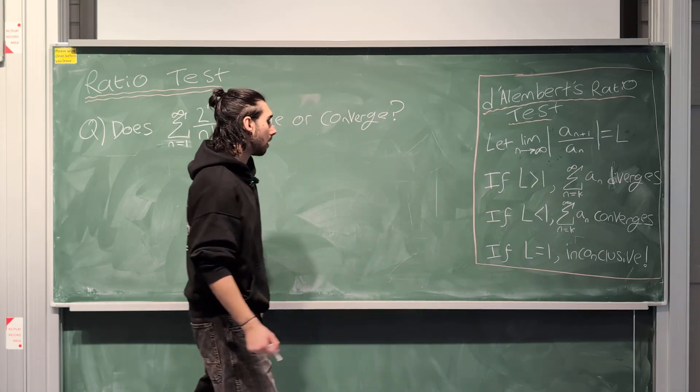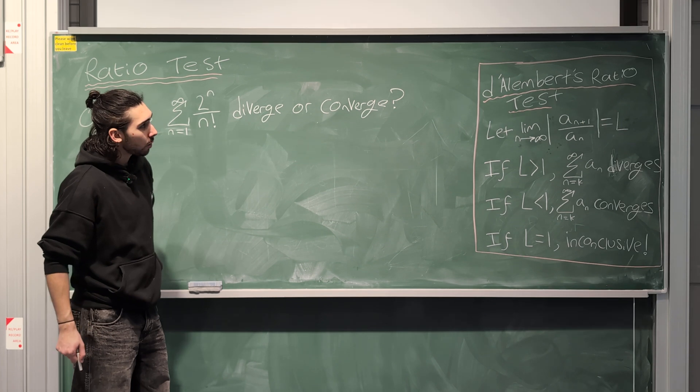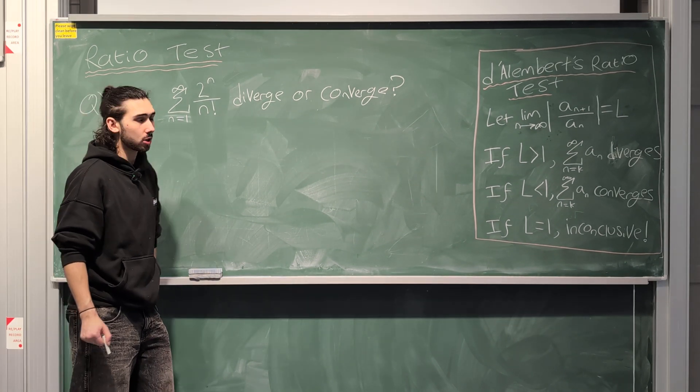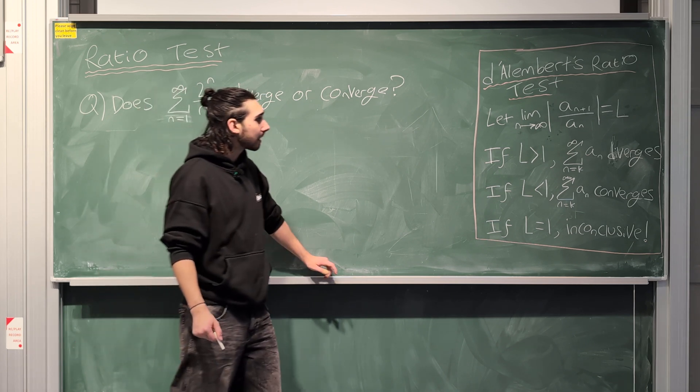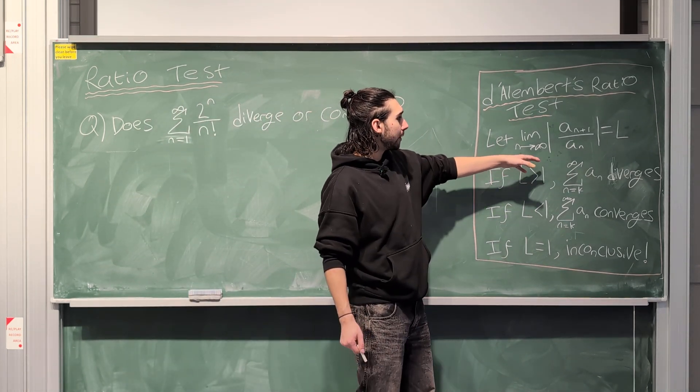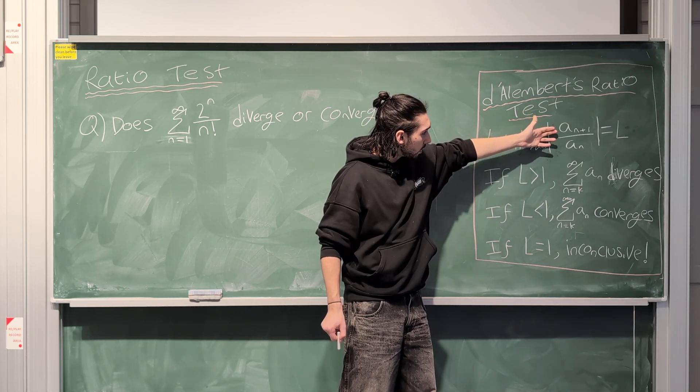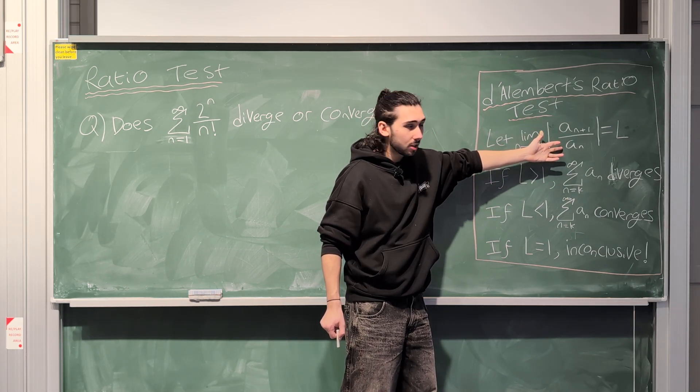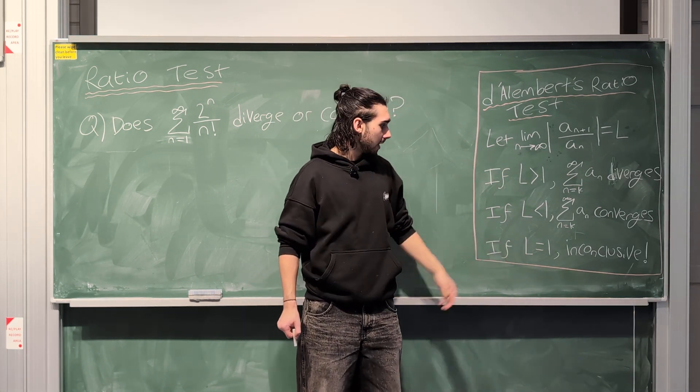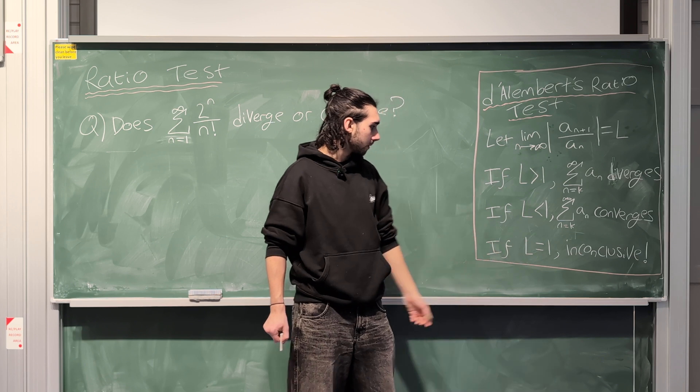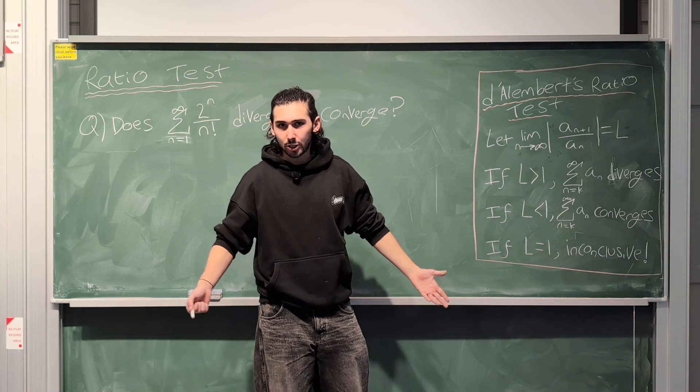Once again, just as a recap of the last video, this is D'Alembert's ratio test or just the ratio test, sometimes called the Cauchy ratio test. Basically we have the limit as n goes to infinity of the ratio between the next term in the series and the current term in the series. We call that L, and if L is bigger than 1, the series diverges. If L is less than 1, it converges. If L is equal to 1, we say that it's inconclusive because we just don't know.